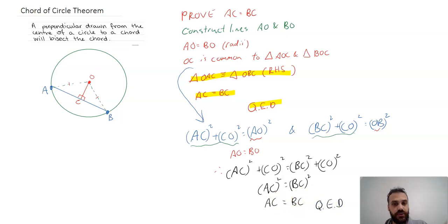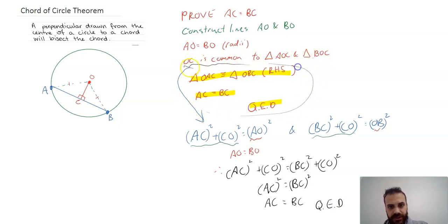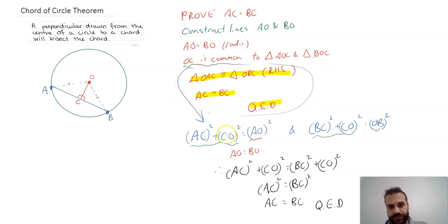So there are two ways to solve this. They both start the same way, and then you can either use congruent triangles or you can use Pythagoras.